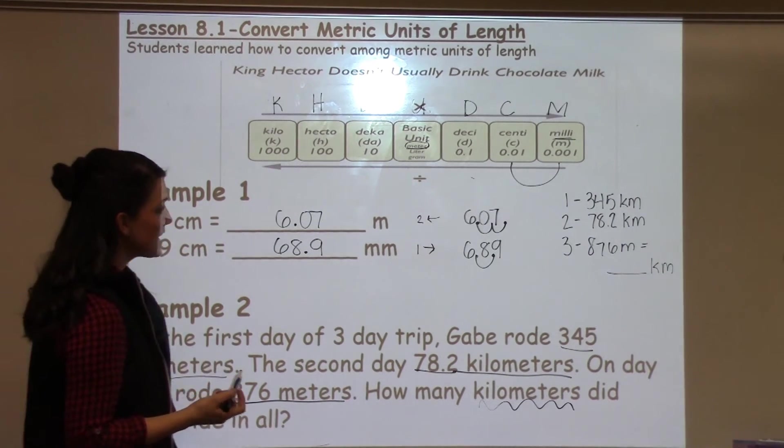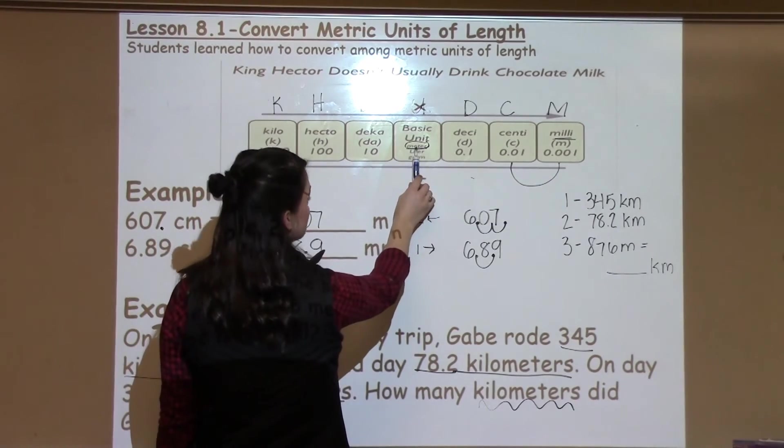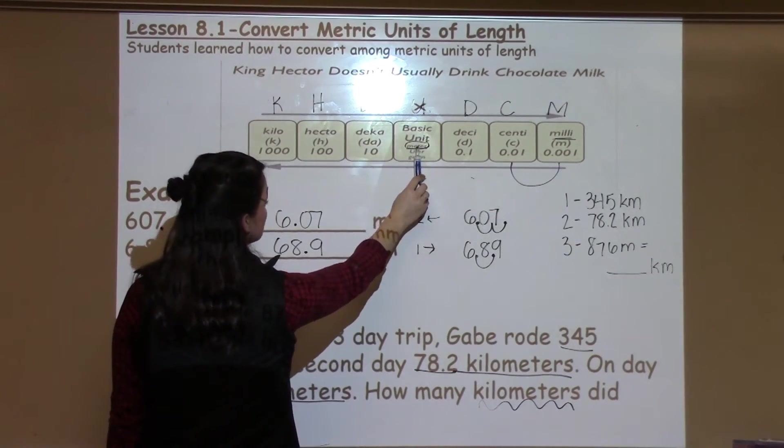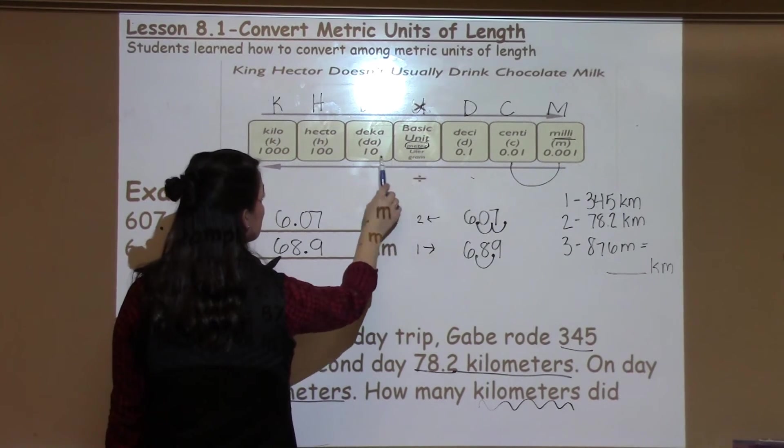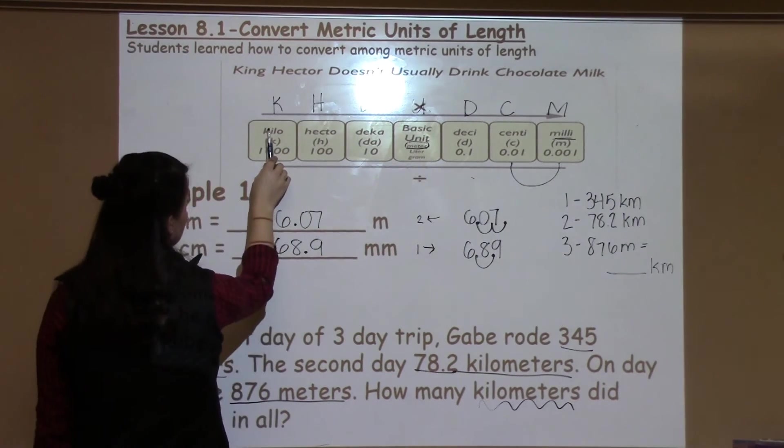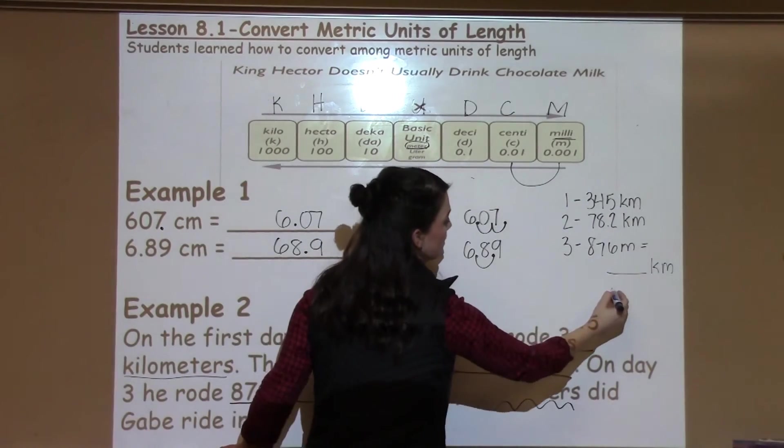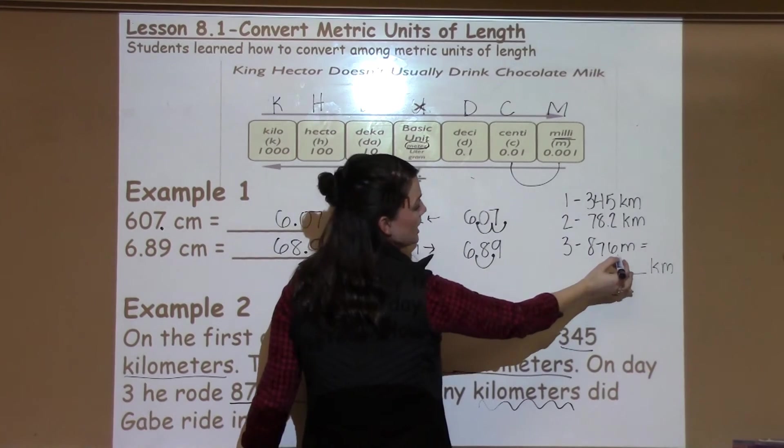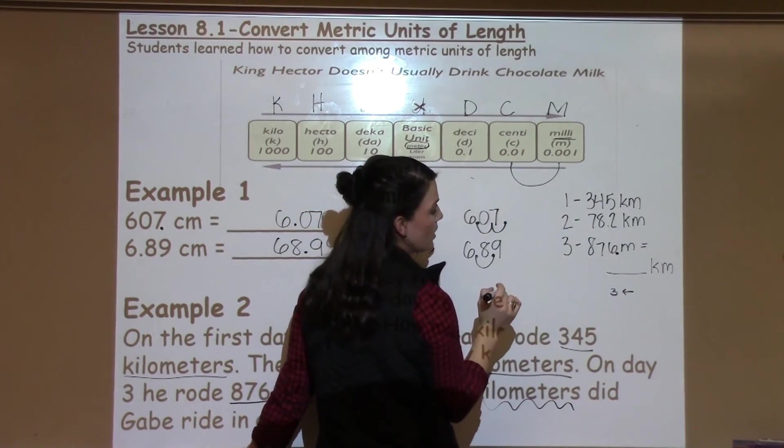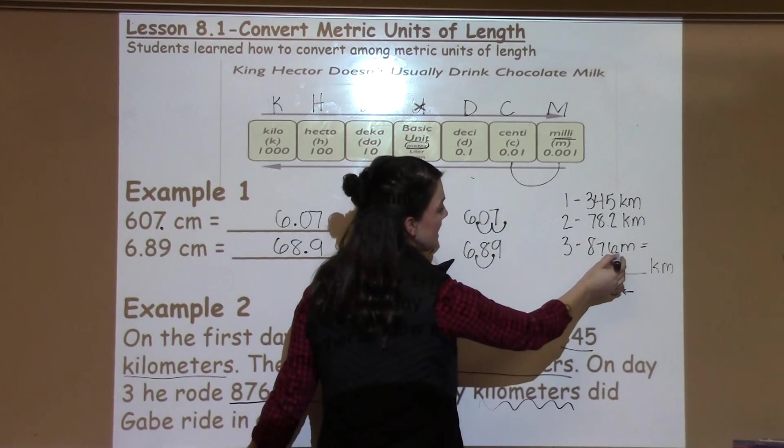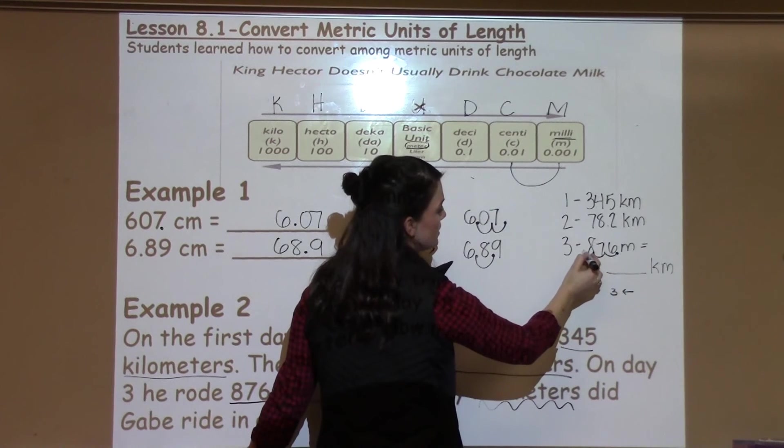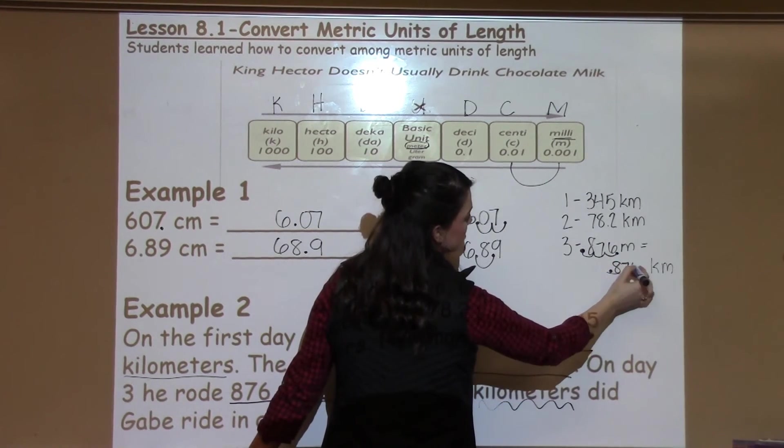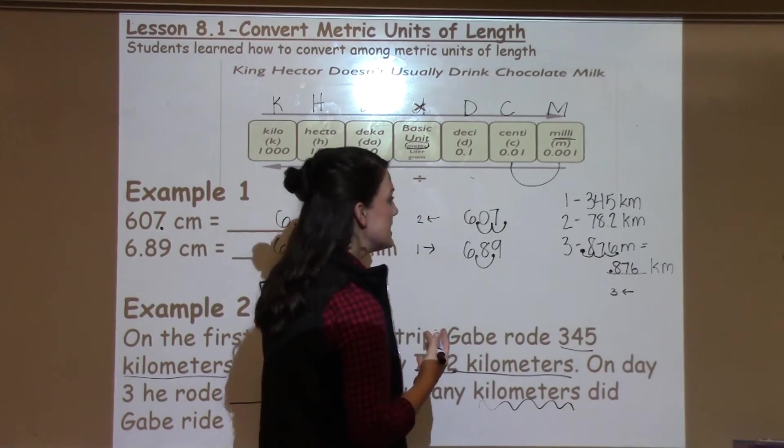So I'm first going to start with what I have a number for, which is meters, and I'm going to note how many times it takes me to move to kilometers and what direction. So I'm moving one, two, three, so I need to move three spaces and I was moving to the left. So I'm going to start where there would be a decimal on a whole number, which is always at the end, and I'm going to move one, two, three spaces to the left for a final answer of 0.876 kilometers.